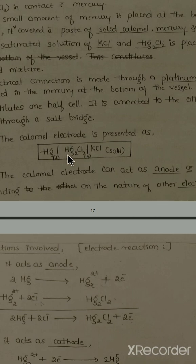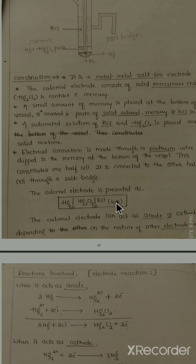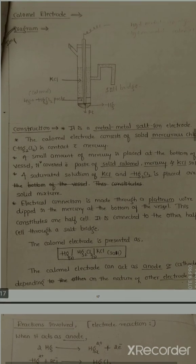The cell representation of the calomel electrode is: Hg(l) | Hg2Cl2(s) | saturated KCl. Mercury in liquid state is in contact with mercurous chloride in solid state, which is in contact with saturated KCl. Reading from one direction: Hg, Hg2Cl2, KCl.